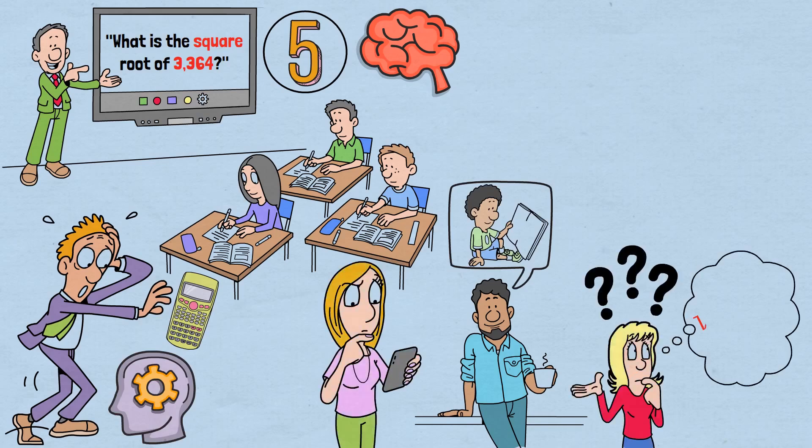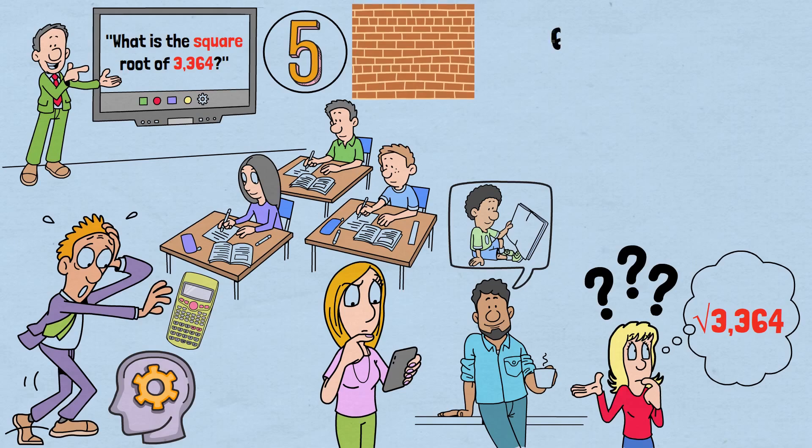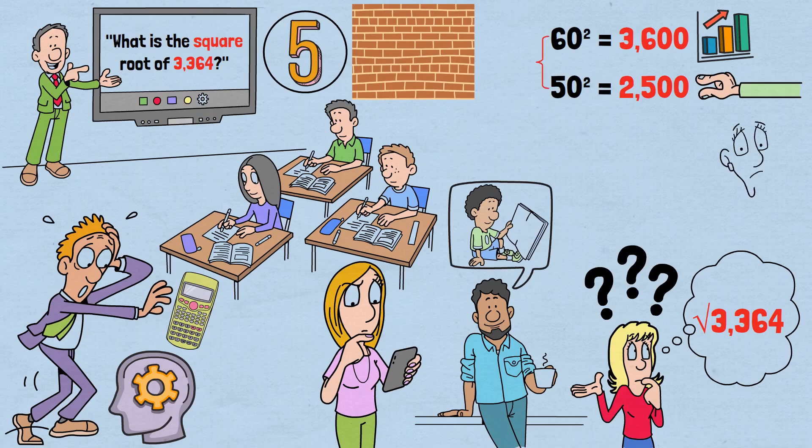When faced with problems like finding the square root of 3,364, most people's brains immediately hit a wall. They know that 60 squared is 3,600—too big. They might remember that 50 squared is 2,500—too small. So they're somewhere in between, but how do you narrow it down further without tedious trial and error?